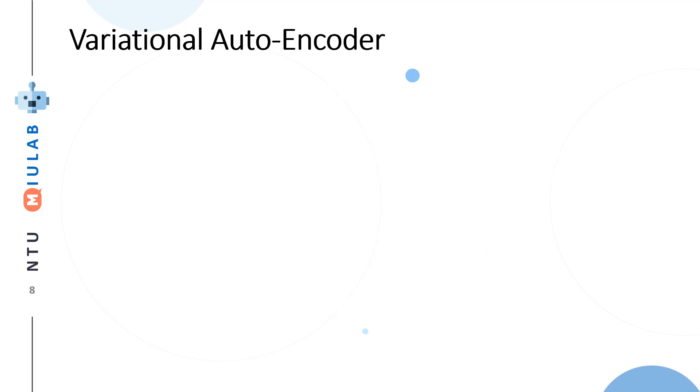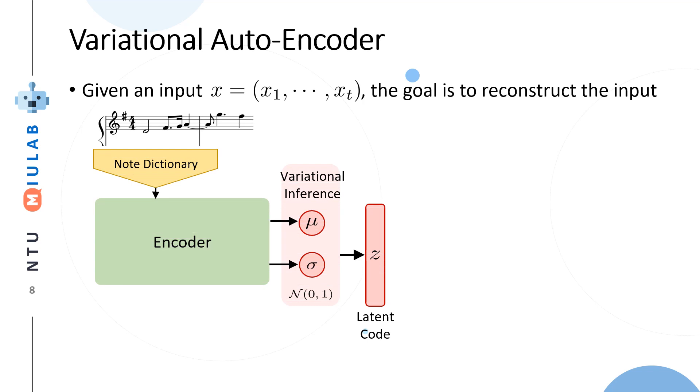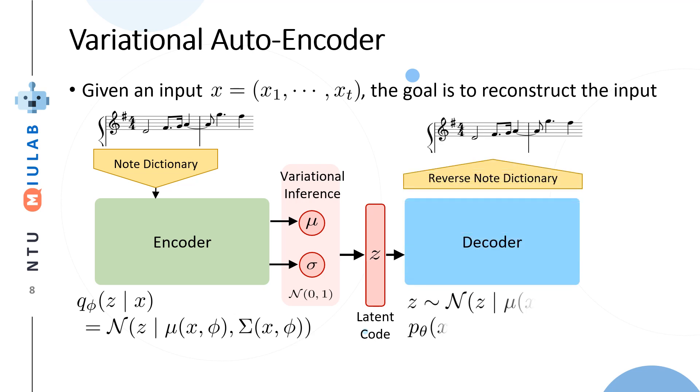Our basic architecture is based on variational autoencoder. Given input x, the goal is to reconstruct the input. After we get the note representation, the encoder tries to learn, given x, the probability of the latent code as a distribution. In the decoder, we sample the code from the distribution and try to generate x. The generated x should be as close as the input x. The goal is to reduce the loss, like reconstruction error, and the second term is like regularization.